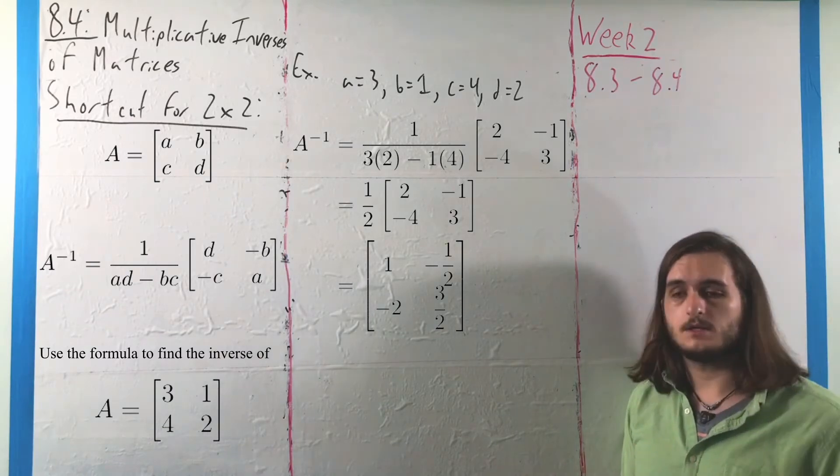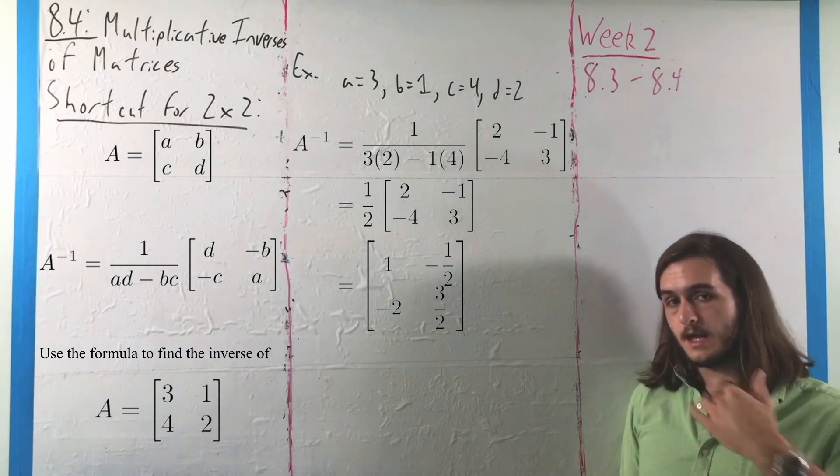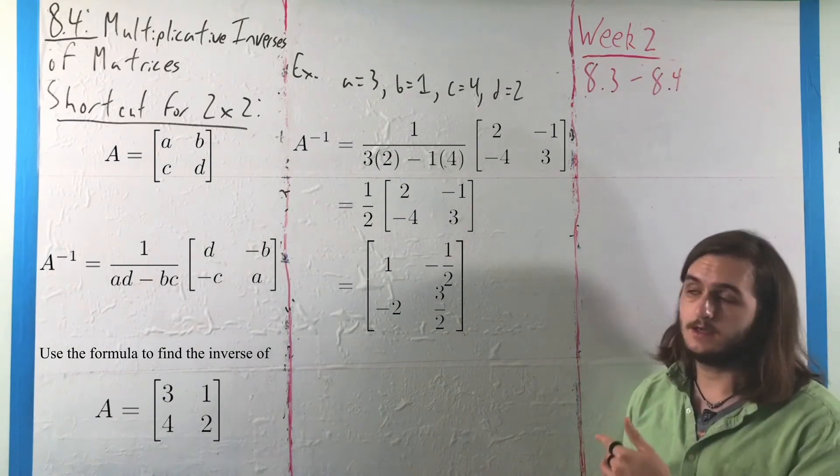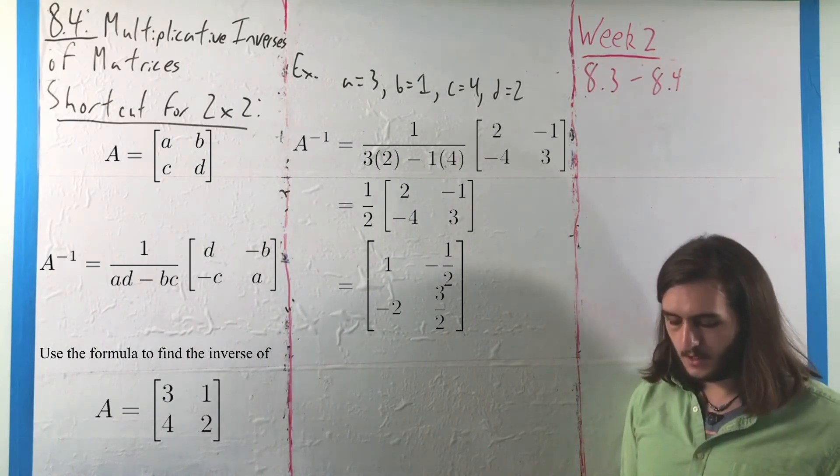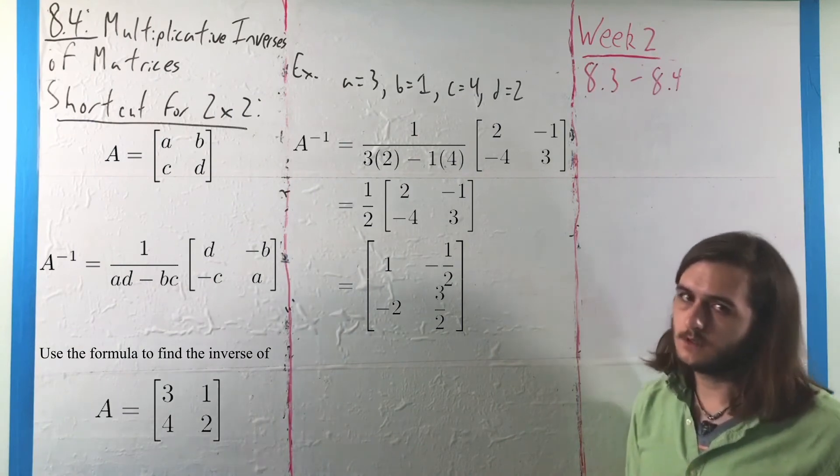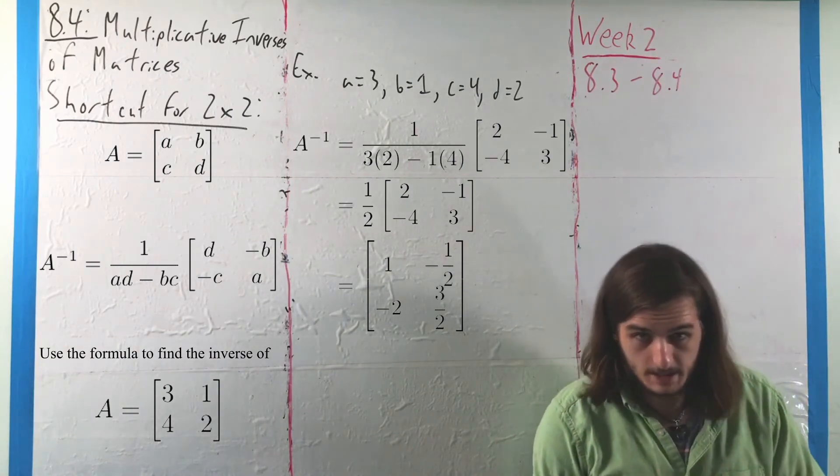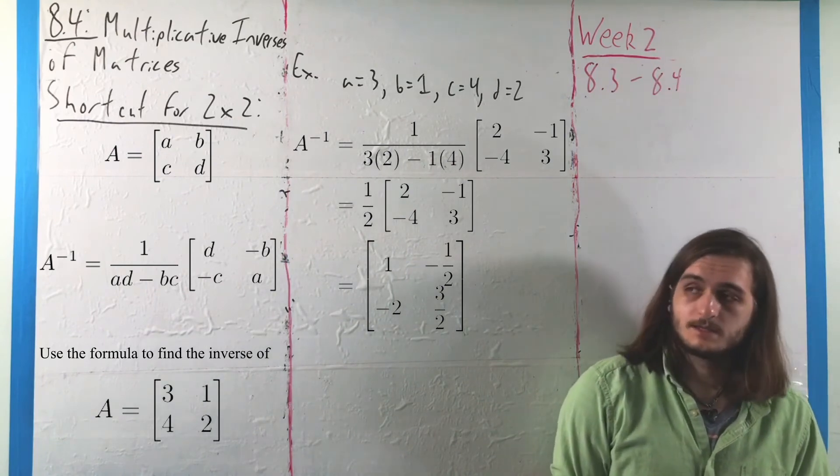And I'll leave it to you guys to verify that in this case, A times A inverse and A inverse times A actually will return the identity. But hopefully, as you get comfortable working with these, you'll be able to see that it's going to work the way that it's supposed to.